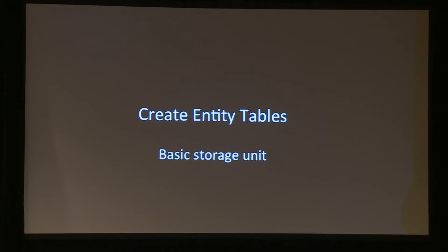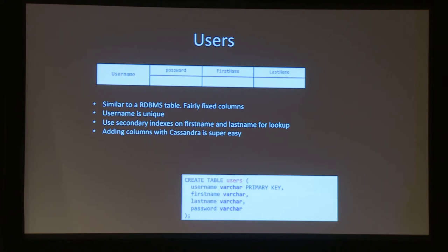The real fun starts with the entity tables — this is your basic storage unit, this is where you start with your application design. Every user-based system has a table called users or something like that. These tables in Cassandra would be very similar to what you'd do in a relational database. I'm going to use the word 'table' and 'column family' kind of interchangeably, but 'tables' is fine — that's really what it is, a table of data.